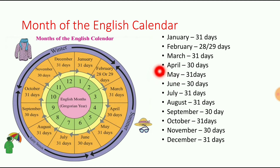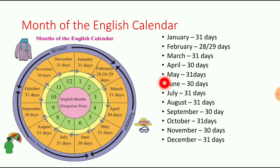Next: April. April is the fourth month in the year. April has 30 days. इसमें 30 days होते हैं.